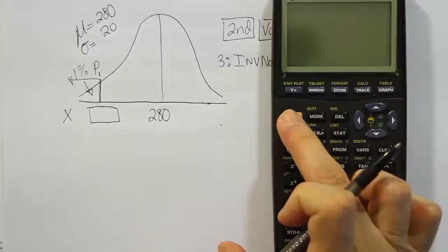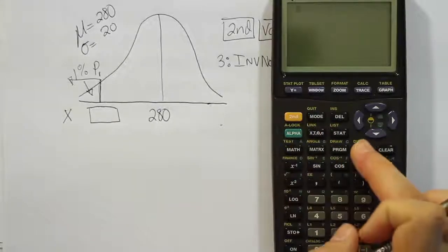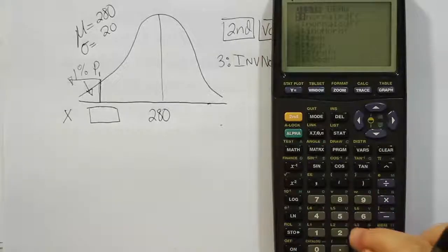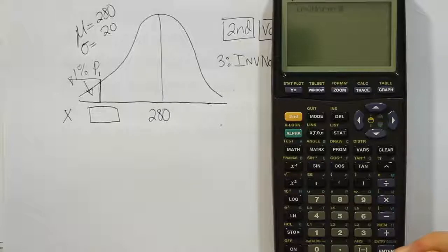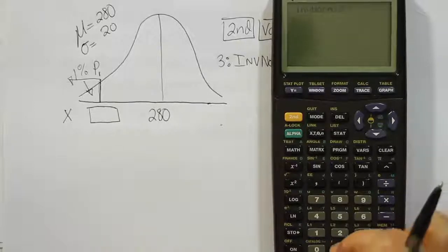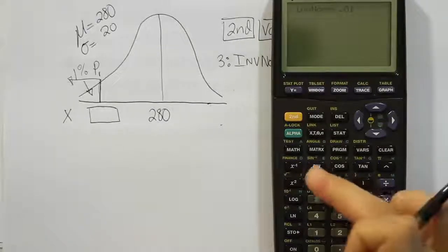So we're going to press 2nd, then the VARS key. Once we do that we're going to take option 3. Then we have option 3, it says inverse norm. We're going to enter the .01, then the comma.